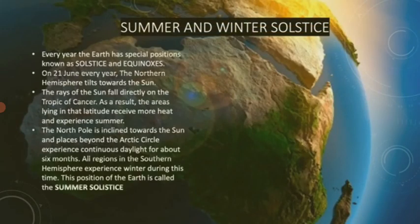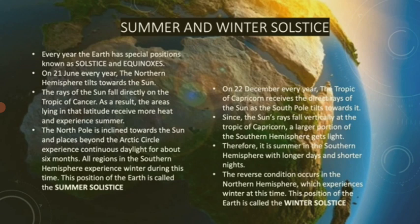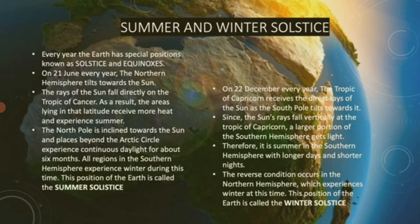Now let's talk about some special positions of the Earth: solstice and equinox. Every year, the Earth has special positions known as solstices and equinoxes. On 21st June every year, the northern hemisphere tilts towards the Sun. The rays of the Sun fall directly on the Tropic of Cancer. As a result, the areas lying in that latitude receive more heat and experience summer.